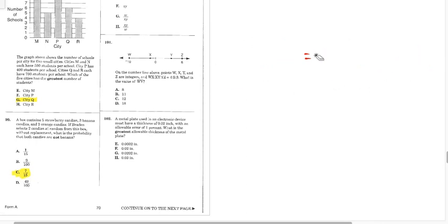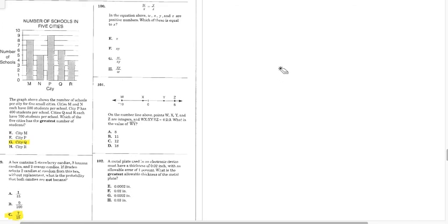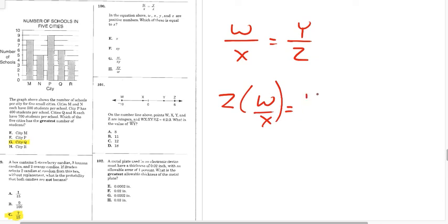Three questions to go. Number 100. We have W over X equals Y over Z. We need to find Z, okay? So, first we need to multiply by Z. So, we have Z times W over X equals Y. Let me do the reciprocal here. So, Z equals YX over W. YX over W, H. Number 100.